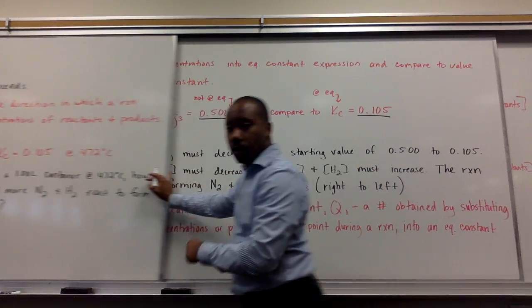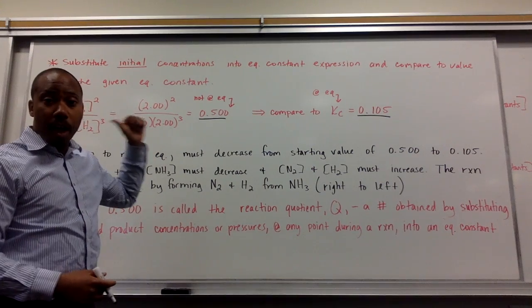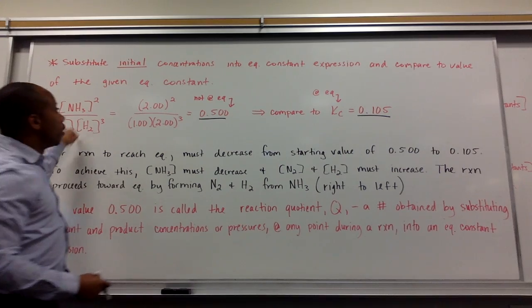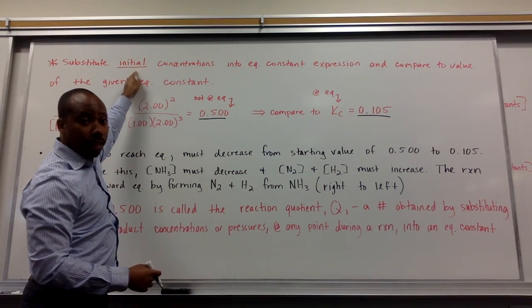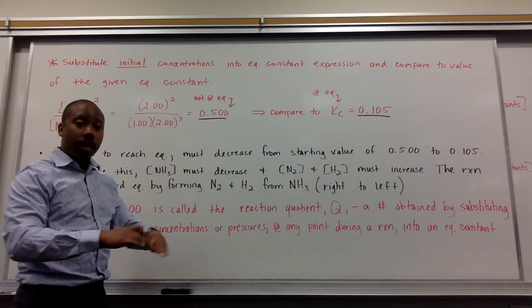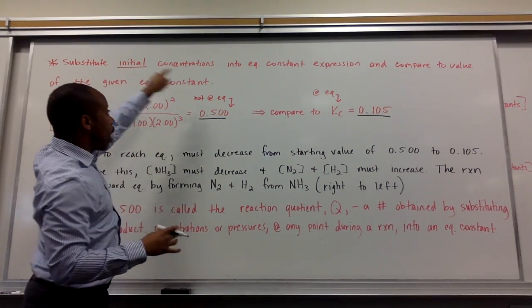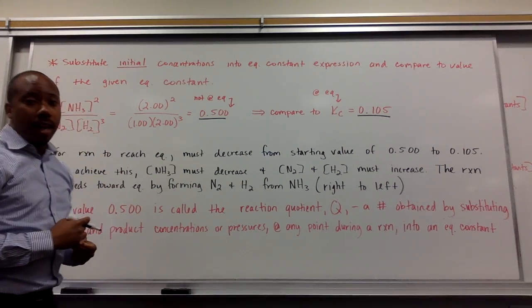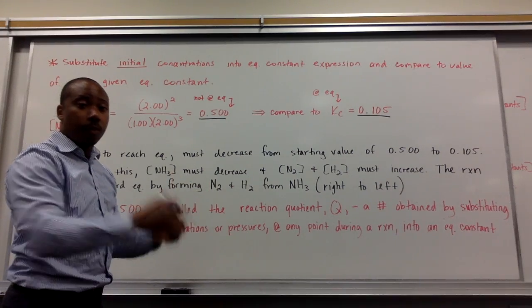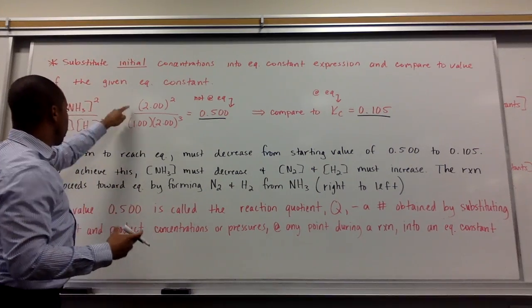To answer this question, we have to look towards our equilibrium constant expression. We substitute those given values on the last board into our expression. However, those values given were initial concentrations. They were not concentrations at equilibrium. If you think about your ice charts, they were not at the equilibrium portion. They're actually at the initial state or stage. So, we substitute our initial concentrations into that equilibrium constant expression, and then we compare that, what we get, to the given equilibrium constant from the problem. The given one was 0.105, and now we're going to plug in our concentrations here to see what we get.